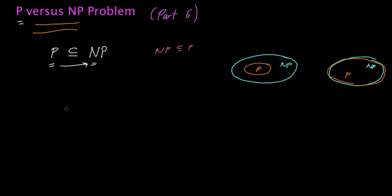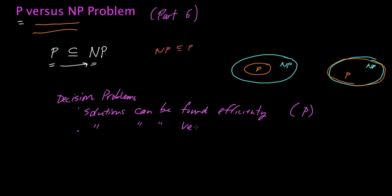So on the one hand, you have decision problems. In general, we always talk about decision problems when talking about P versus NP. So you have decision problems such that solutions can be found efficiently. And the problems for which solutions can be found efficiently when the decision problems is P. Then you also have decision problems where solutions can be verified or checked efficiently. And this is the classic problem that's known as NP.